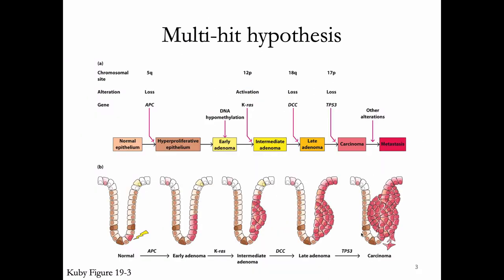This figure from your textbook indicates the multi-hit hypothesis. It's largely the same thing: a cell might get some type of mutation that makes it hyperproliferative, then gets some other type of change that will further alter its proliferation, and on and on, until we actually get to what we normally think of as cancer.